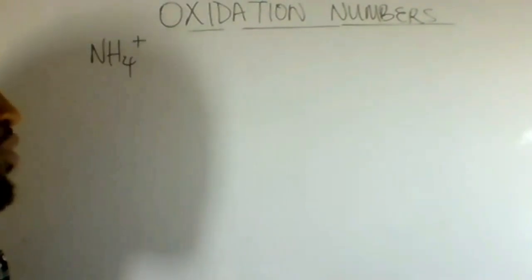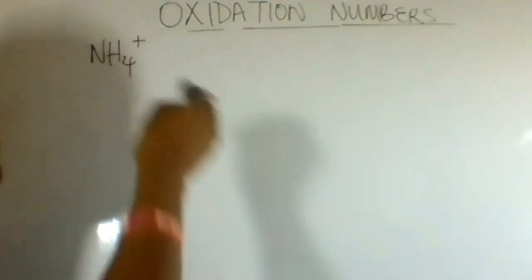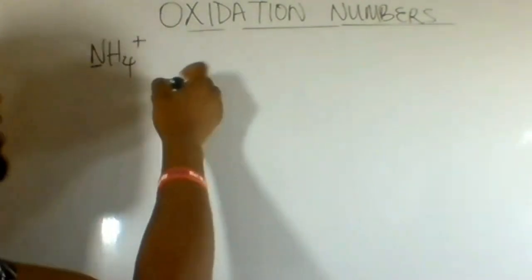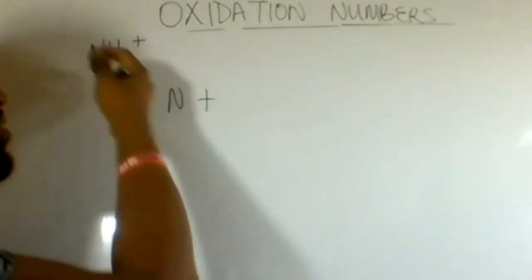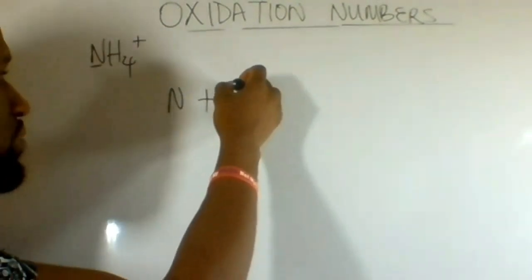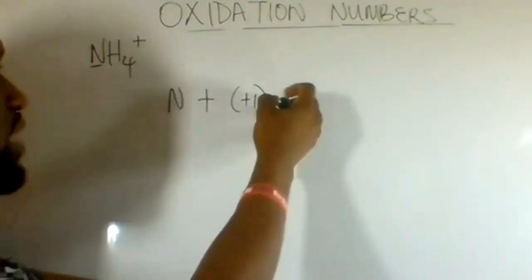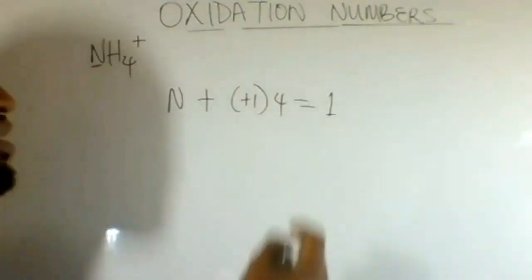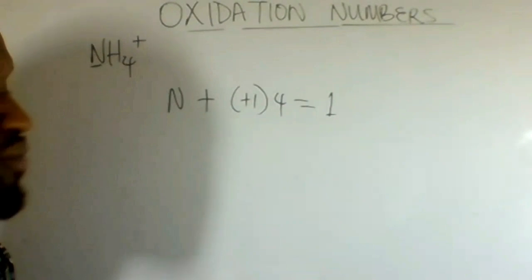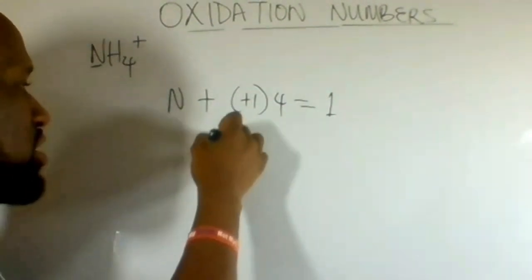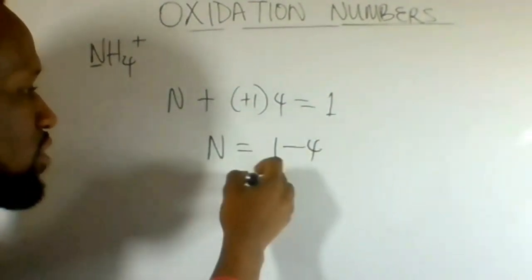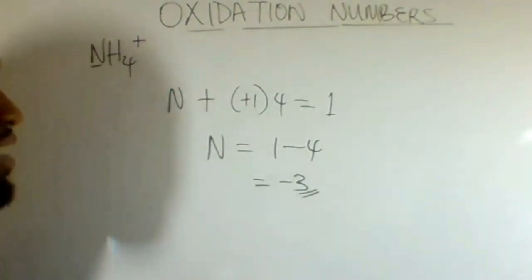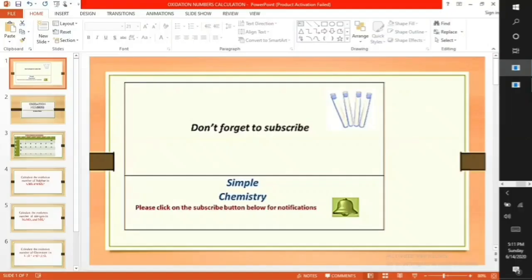Our second example: calculate the oxidation number of nitrogen in ammonium ion. Add everything up and equate it to the charge. Nitrogen added to hydrogen, which is plus 1, multiplied by 4, equated to plus 1 because the charge of ammonium ion is plus 1. Solving this out, nitrogen is 1 minus 4, which is minus 3. Therefore, the oxidation number of nitrogen in ammonium ion is minus 3.